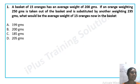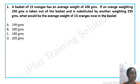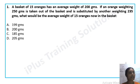The first question: A basket of 15 oranges has an average weight of 200 grams. If an orange weighing 215 grams is taken out of the basket and is substituted by another weighing 235 grams, what would be the average weight of the 15 oranges now in the basket? Options: A) 199 grams, B) 200 grams, C) 185 grams, D) 205 grams.